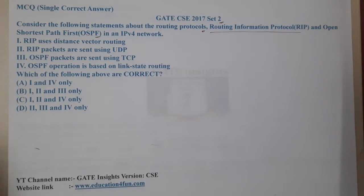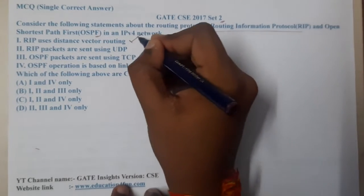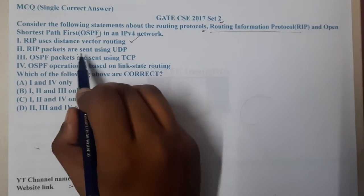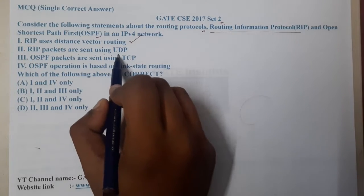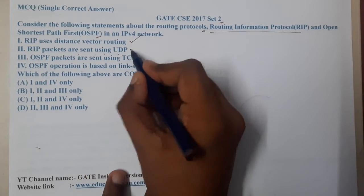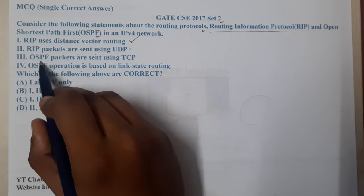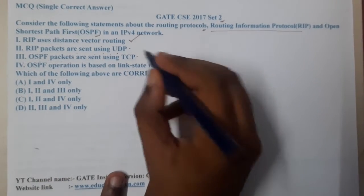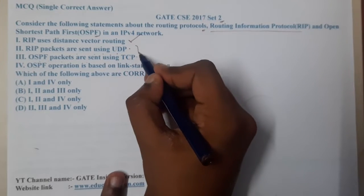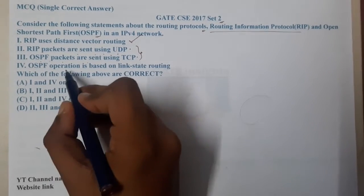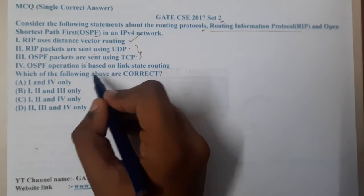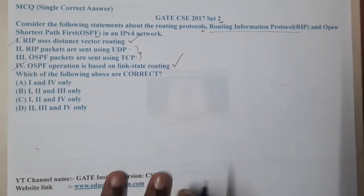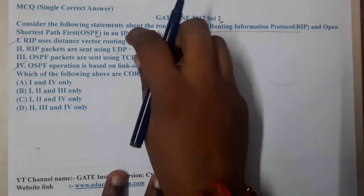Statement I says RIP uses distance vector routing — that is absolutely correct. Statement II says RIP packets are sent using UDP. Statement III says OSPF packets are sent using TCP. Statement IV says OSPF operation is based on link-state routing.